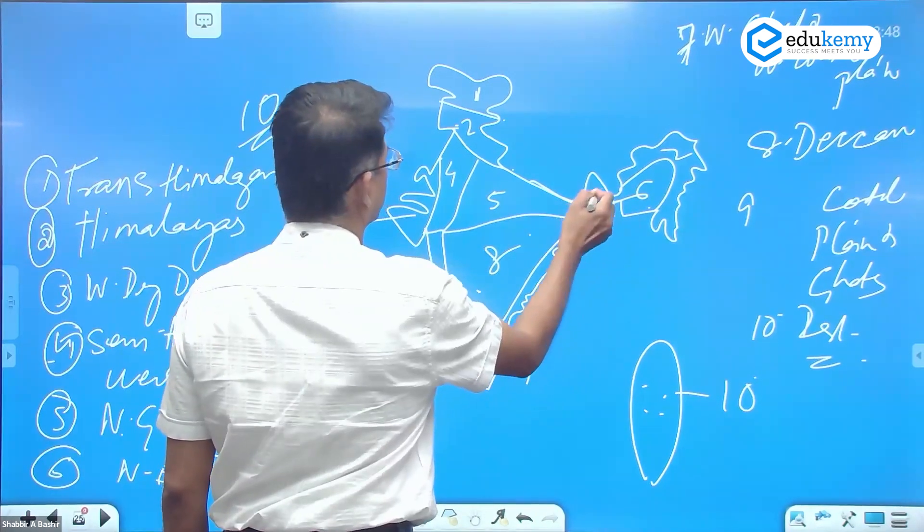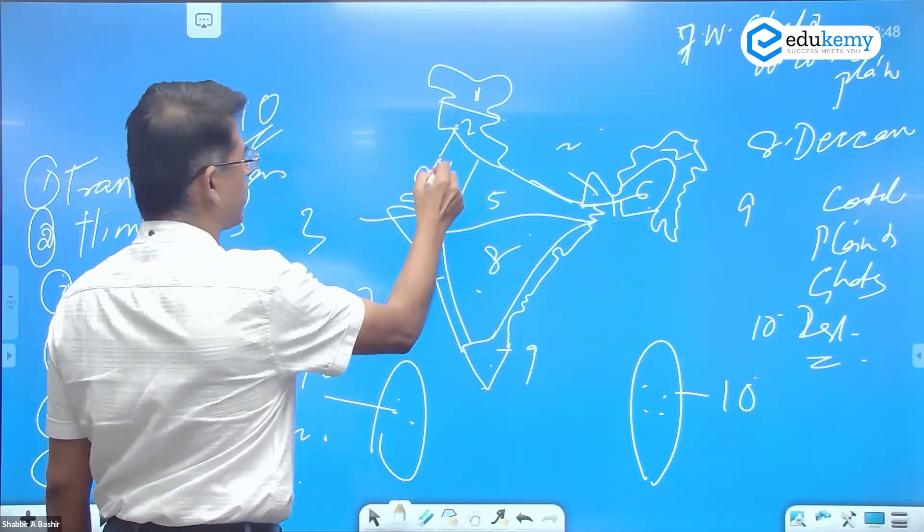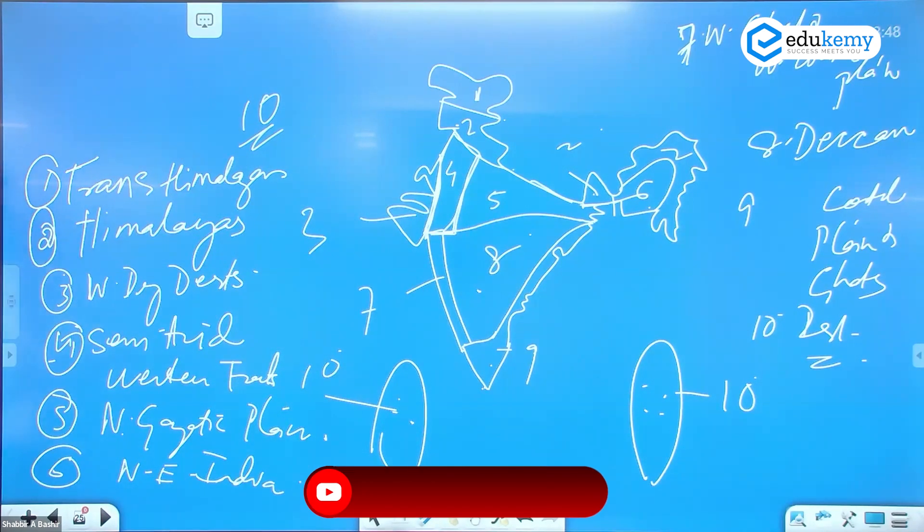Five ends here. This is part of Himalayas. Fourth is this belt, western semi-arid tract - east Rajasthan, parts of Punjab, Haryana.